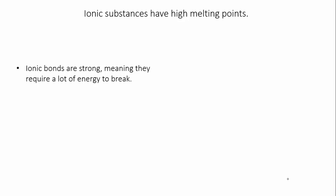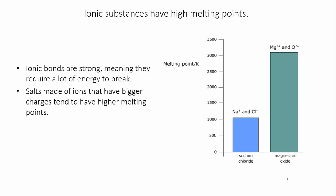What's more, salts that are made of ions with higher charges tend to have higher melting points. So as you can see in this graph here, the melting point of sodium chloride, which is made up of sodium and chloride with single charges, is much lower than the melting point of magnesium oxide, where the ions have 2 plus and 2 minus charges.